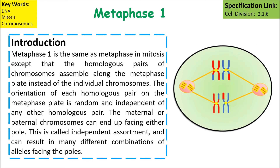Metaphase one is the same as metaphase in mitosis, except that homologous pairs of chromosomes assemble along the metaphase plate instead of individual chromosomes. The orientation of each homologous pair on the metaphase plate is random and independent of any other homologous pair. The maternal or paternal chromosomes can end up facing either pole. This is called independent assortment and can result in many different combinations of alleles facing different poles.